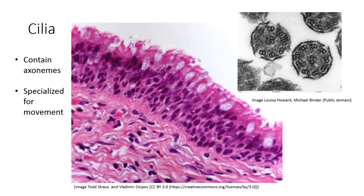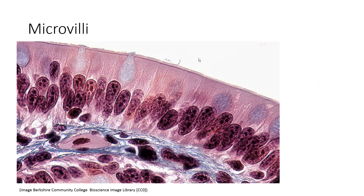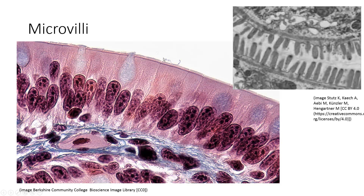Let's compare that to the other apical surface modification: microvilli. Microvilli are these thin, thin, thin structures. We can see hundreds and thousands of them here on the surface of this epithelium, which also has goblet cells in it. If we look at microvilli in longitudinal section, we know that there are no axonemes in here.